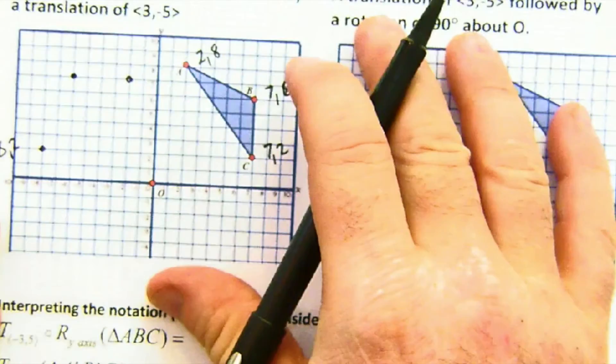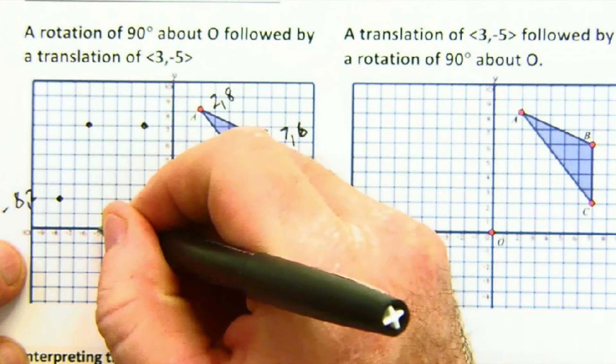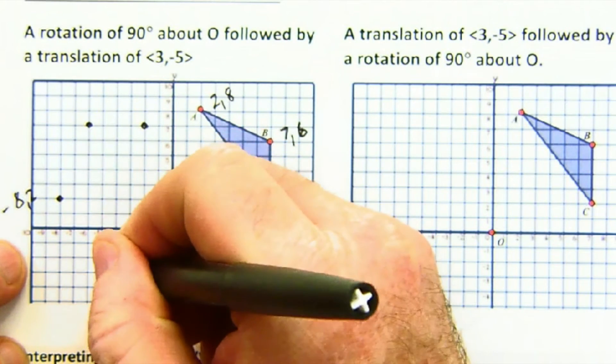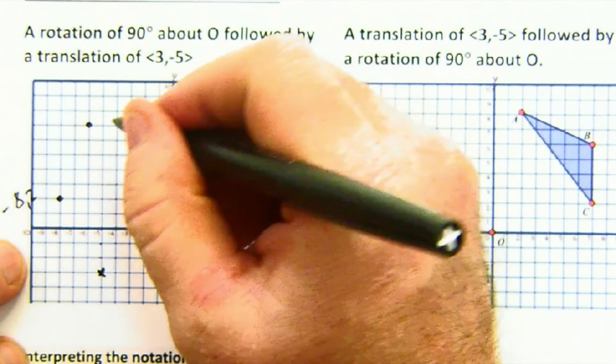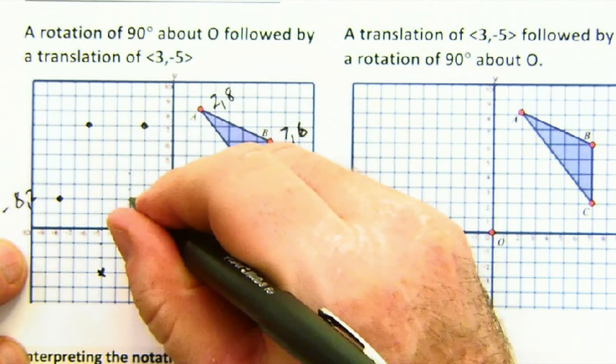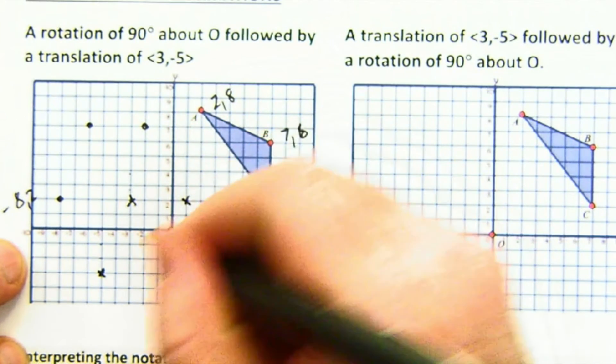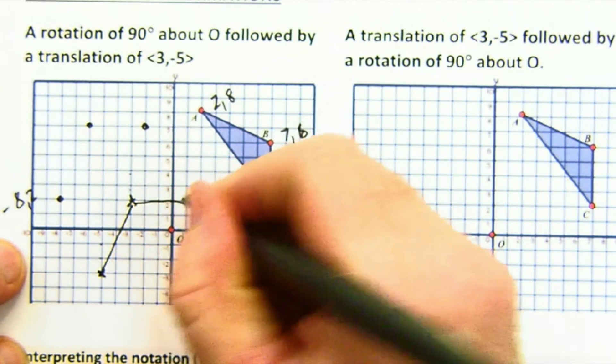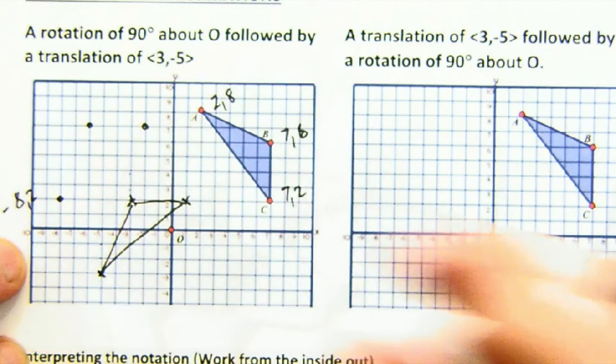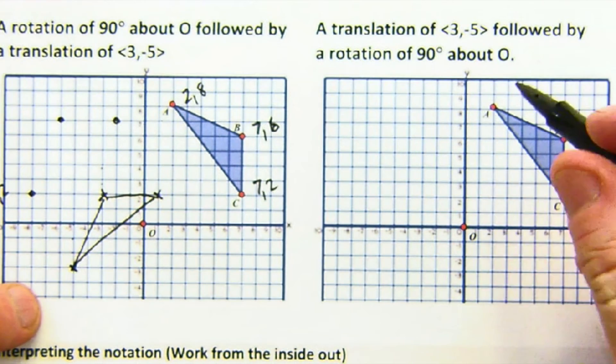And now if we translate everything 3 to the right and 5 down, this is my final resting place if I do it in this order.